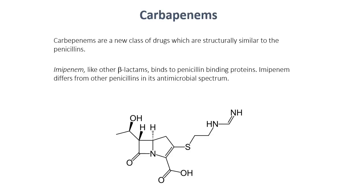The carbapenems are the last subclass of beta-lactams. They have a basic beta-lactam structure and a four-membered ring. Note they lack the side chain familiar in the penicillins; they have a five-membered ring but still have a couple of carboxylic acid groups. Instead, there is a longer chain group onto this thiol. Imipenem and all carbapenems have a similar mode of action — they bind to penicillin binding protein as we saw before. What's different is that imipenem has a different antimicrobial spectrum.